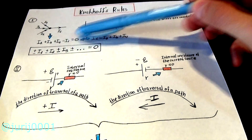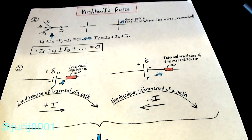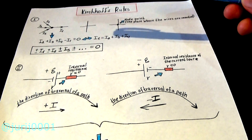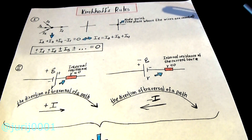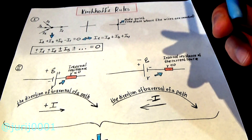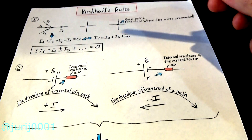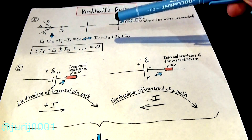Kirchhoff's second law is more complex and sounds like this: the algebraic sum of voltage drops on a given section of an electric circuit is equal to the algebraic sum of EMF on that given section. This seems very difficult and incomprehensible to most students, so let's make this rule clear.